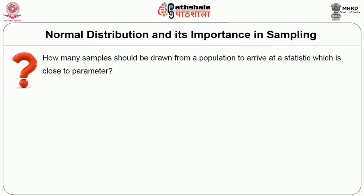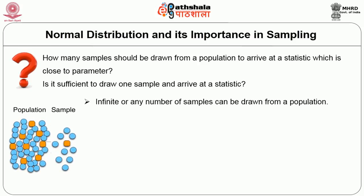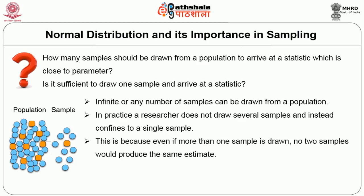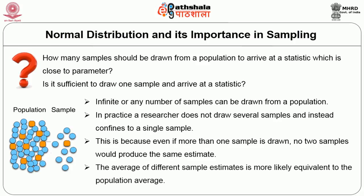The next question is: how many samples should be drawn from a population to arrive at a statistic which is close to the parameter? Is it sufficient to draw one sample? Theoretically, an infinite number of samples can be drawn from a population. However, in practice, a researcher confines to a single sample, because even if more than one sample is drawn, no two samples would produce the same estimate. However, the average of different sample estimates is more likely equivalent to the population average.